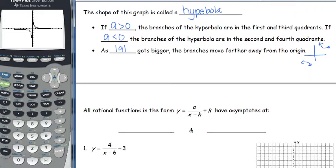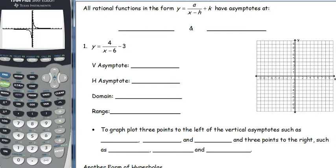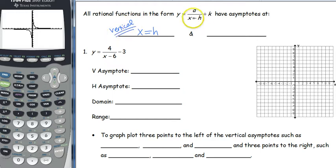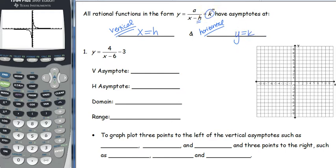All rational functions have a different general form: y equals a over (x minus h) plus k. These have asymptotes at x equals h — that's the vertical asymptote — and your horizontal asymptote is going to be at y equals k. So whatever that k value is, you're going to have a horizontal asymptote there.